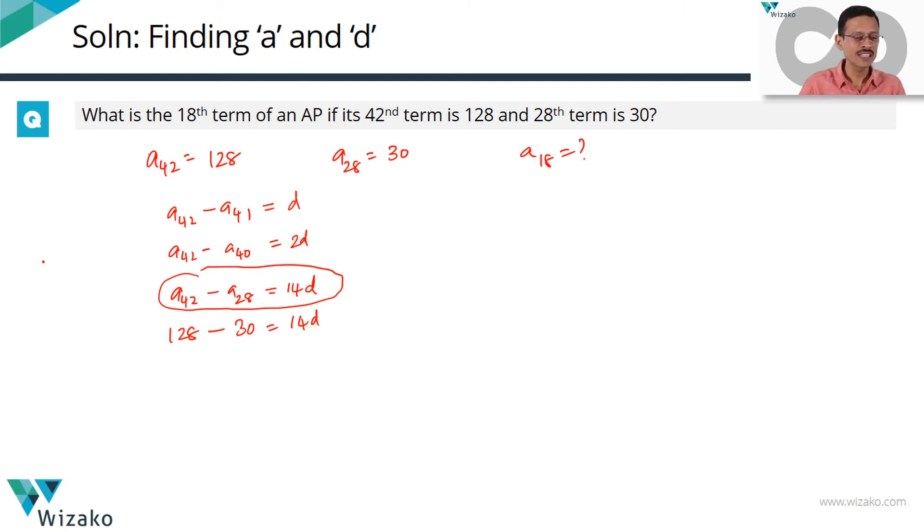For example, if someone gave us the 5th term and the 40th term, how many common differences will be there between these two terms? There will be 35 common differences between these two terms. So that's the idea which we're using.